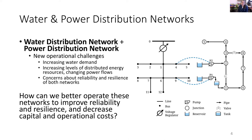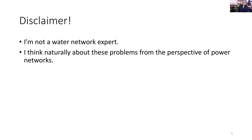The question is: how can we better operate these networks to improve reliability and resilience, decrease capital and operational costs, and better utilize existing infrastructure? Here I'm showing a one-line diagram of a power distribution network — the IEEE 13-bus network — and a typical water distribution network. The coupling I'm showing explicitly is pumps at different buses in the power distribution network, pumping from reservoirs to fill a tank, with water going around to feed demand. I'll talk about this from the perspective of the power system, which is my background.